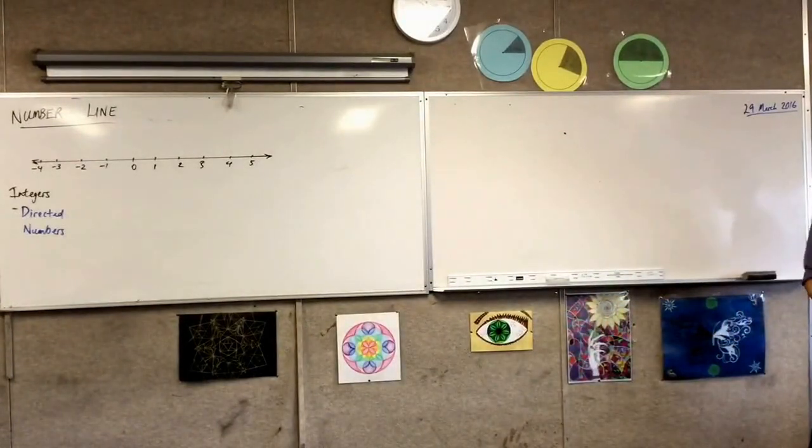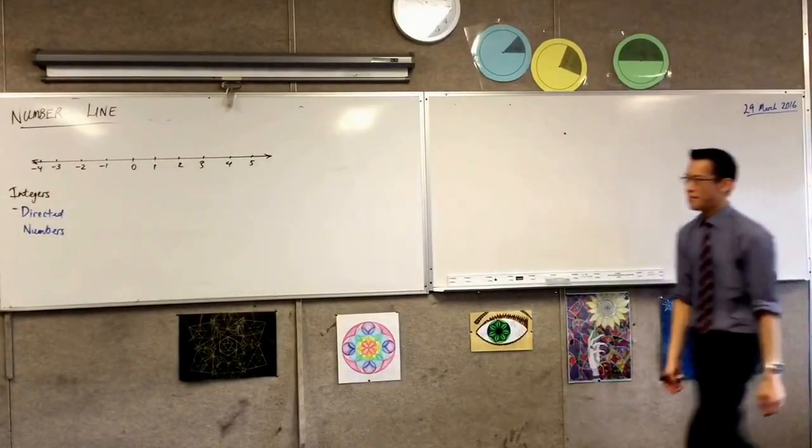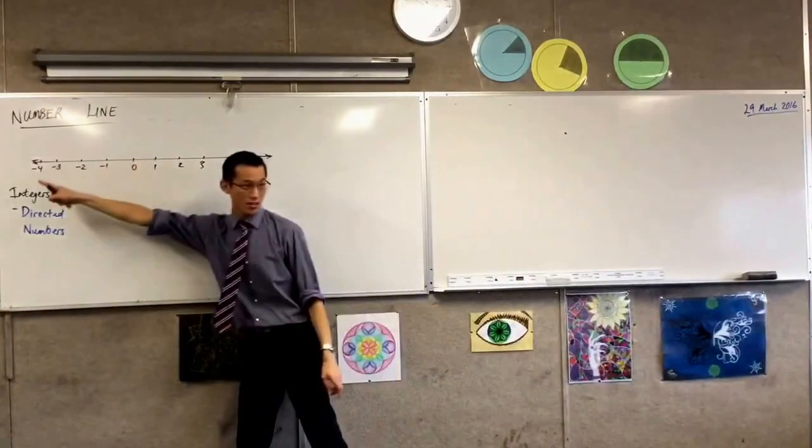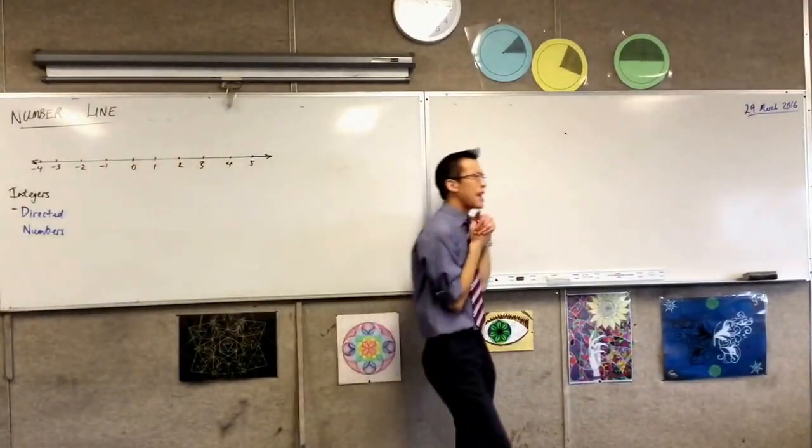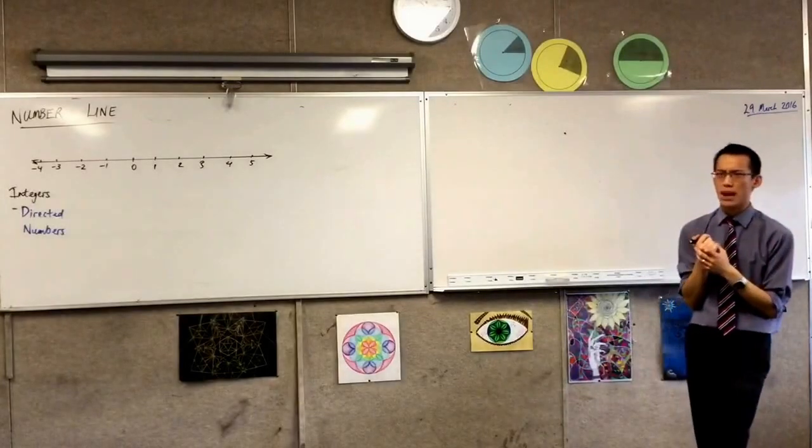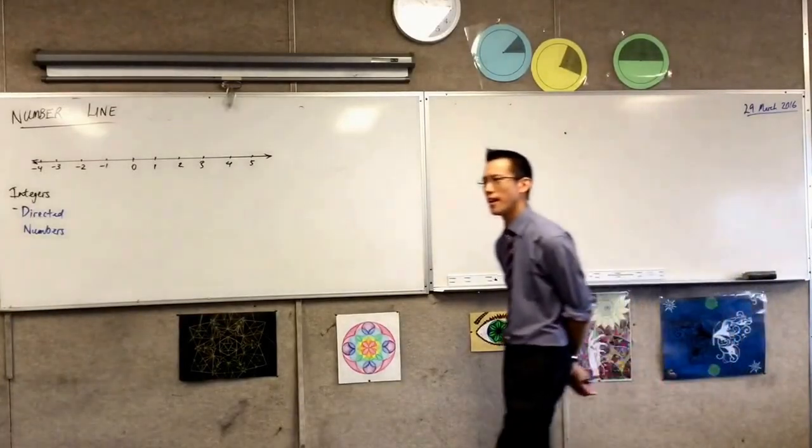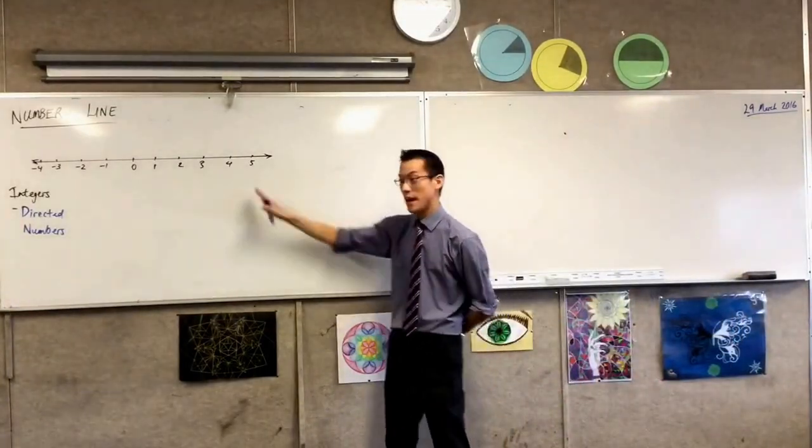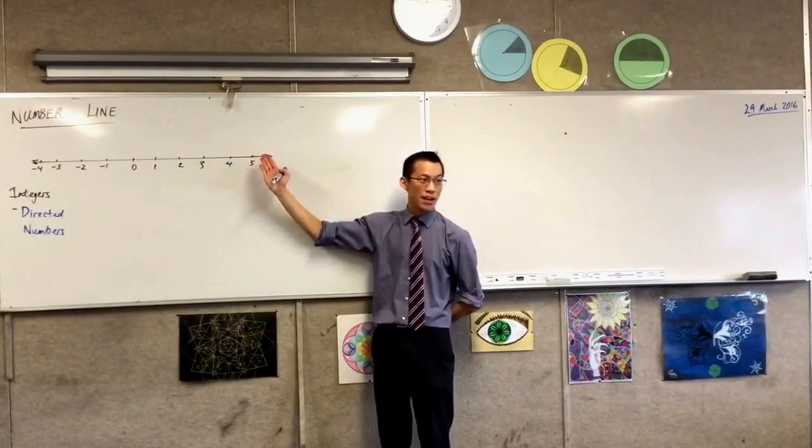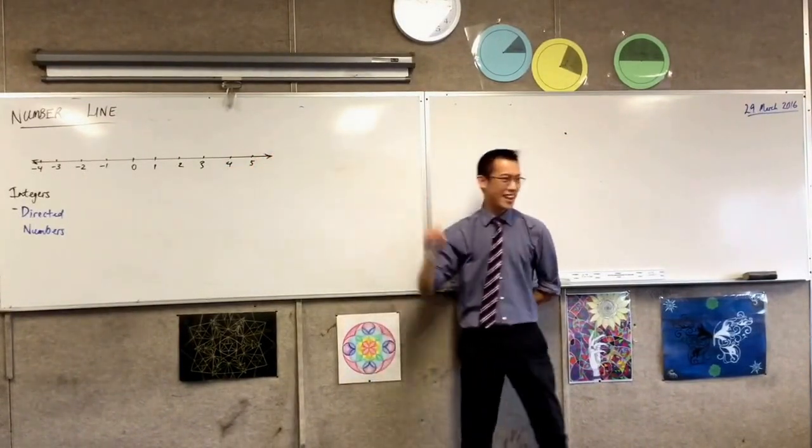So here the idea is that numbers have a position that can go all the way in this direction or that direction. Now, someone told me, why are there arrows on the ends of my number line? Why do we bother putting arrows there? Yeah, Darcy. Saying that you can go on forever? Yeah, very good. I mean, my number line stops at five. But you could keep going, six, seven, eight, nine, ten.